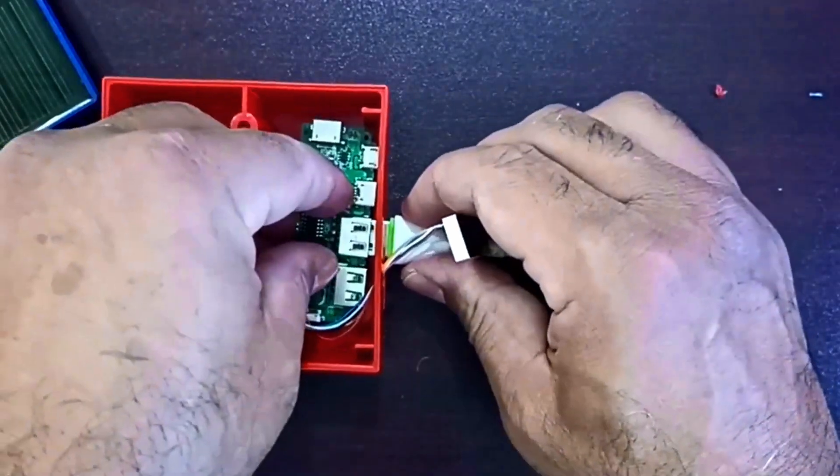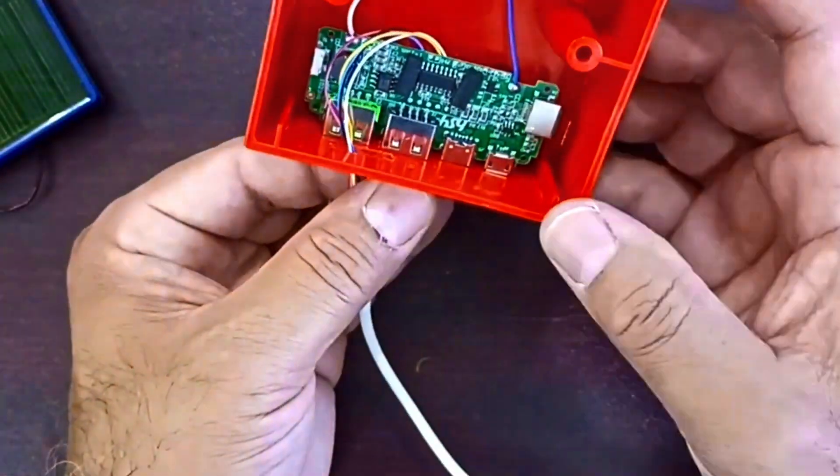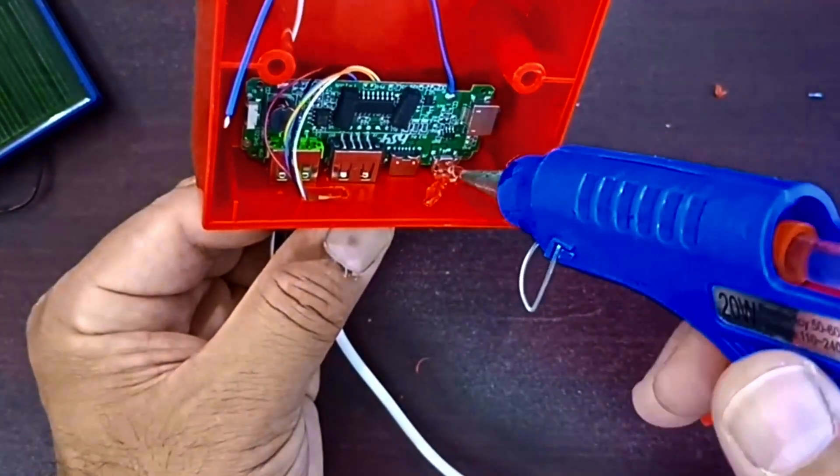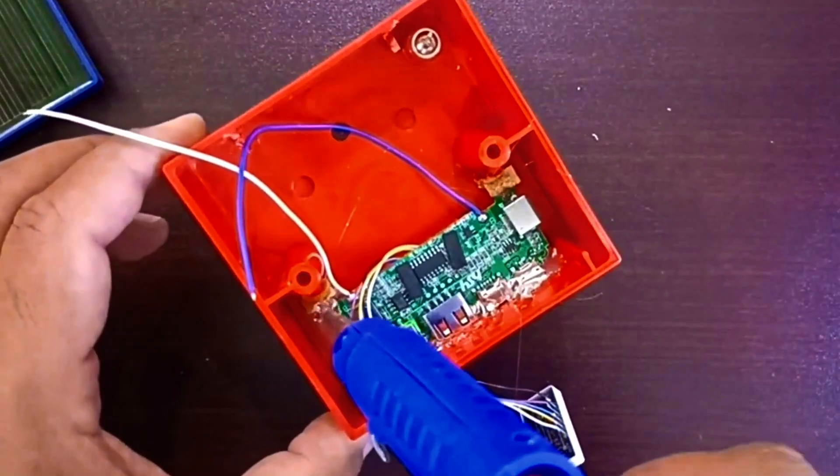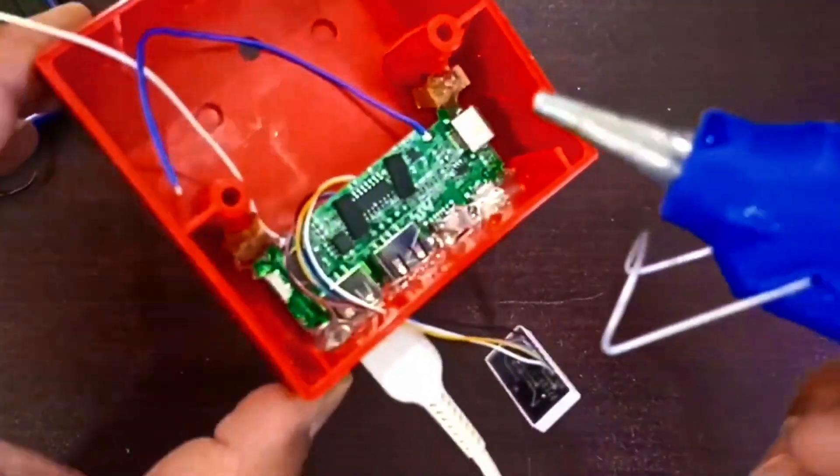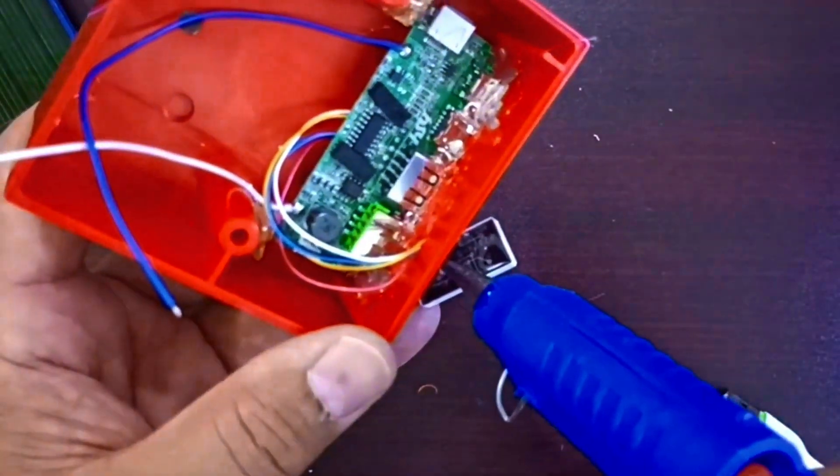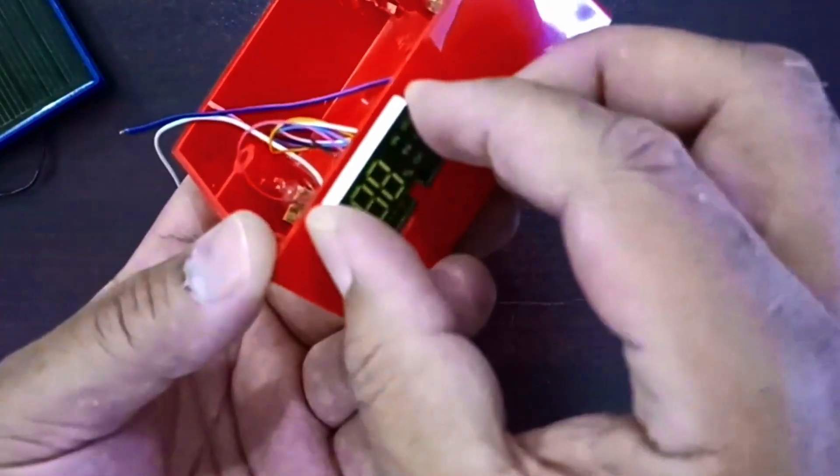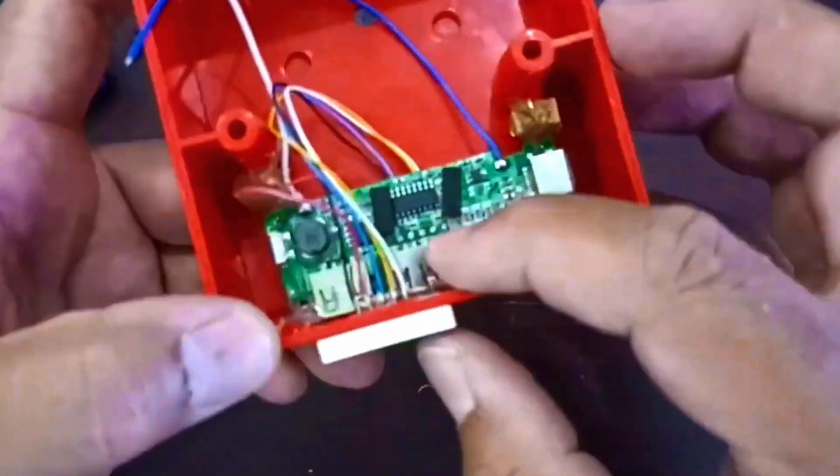Sliding the whole module into the case, ports and display line up perfectly. Locking it down with a few drops of hot glue, solid but not messy. Carefully gluing the display in, making it look super clean.